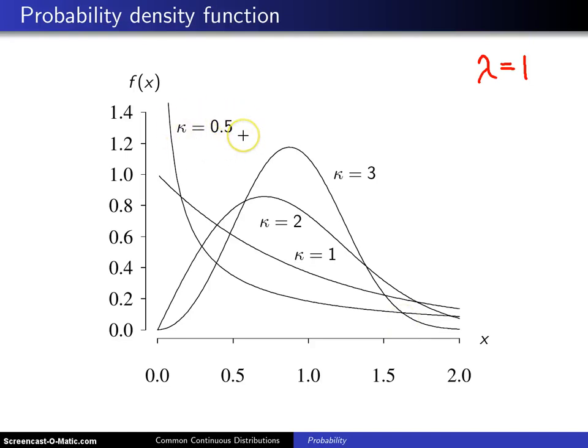And finally, for a kappa value that is less than 1, for example, kappa equals 1 half, you get a vertical asymptote at 0, and then the probability density function comes down rather quickly because it, of course, has to integrate to 1, just like any of the probability density functions. So that's the look of the probability density function of a Weibull random variable for several different values of the shape parameter kappa.